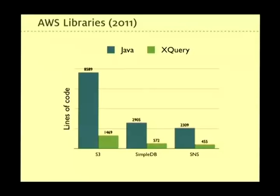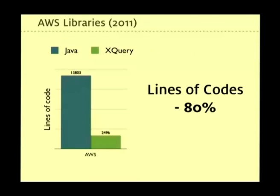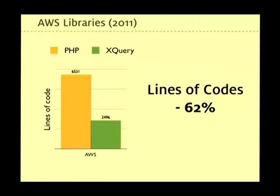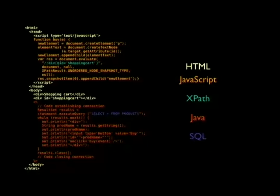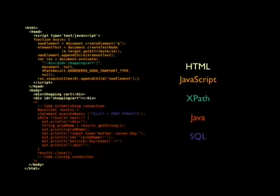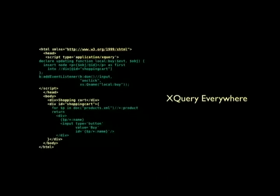Last year, a student from Mannheim wrote an AWS client library in XQuery. Once it was done, he compared the number of lines of code to the equivalent Java client library. For the same level of functionality, it took 80% less code to build the library in XQuery. Looking at a PHP comparison code snippet, you can get a feeling of why XQuery is so much more productive — you have Java code, SQL expressions, XPath, JavaScript, and HTML all mixed together. With XQuery, we use a single programming language across all layers.